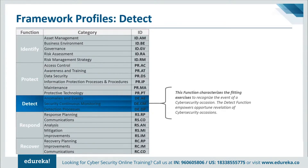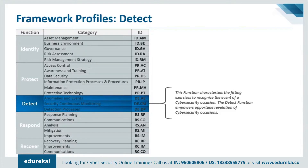The next function is Detect, which is used to develop and implement appropriate activities to identify the occurrence of a cybersecurity event. The Detect function enables timely discovery of cybersecurity events. Examples of outcome categories include anomalies and events, security continuous monitoring, and detection processes.